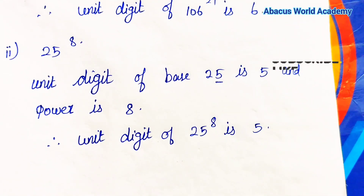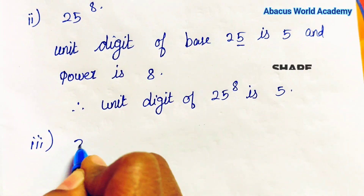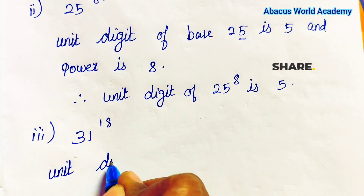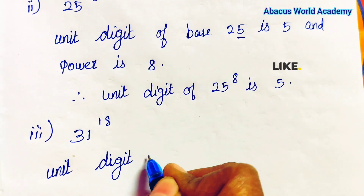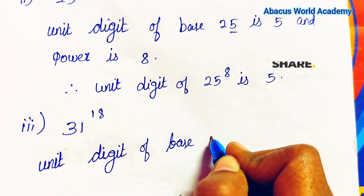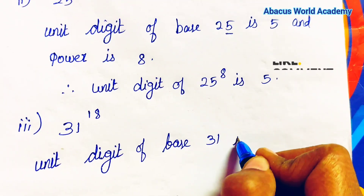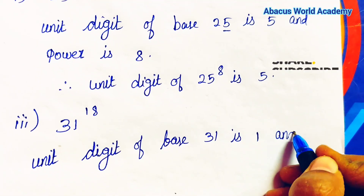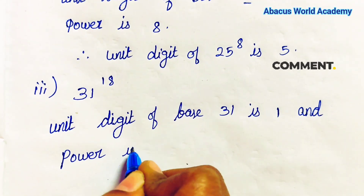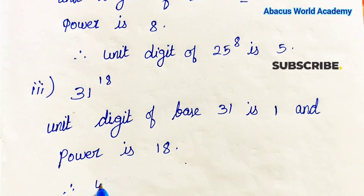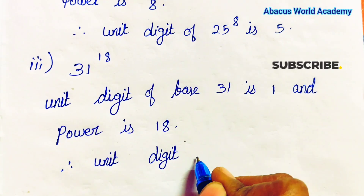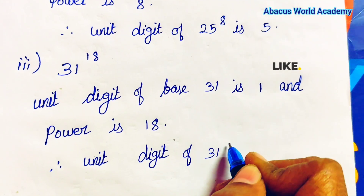Third one: 31 to the power 18. Unit digit of base 31 is 1, and power is 18. Therefore, unit digit of 31 to the power 18 is 1.